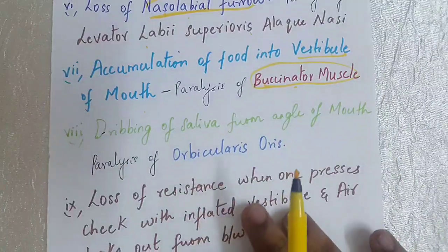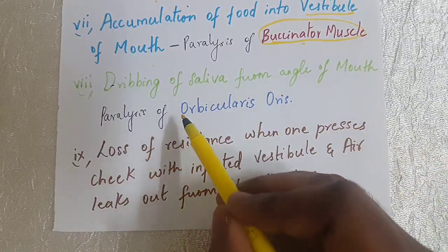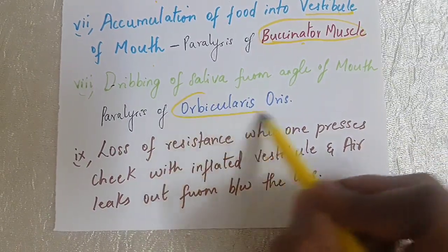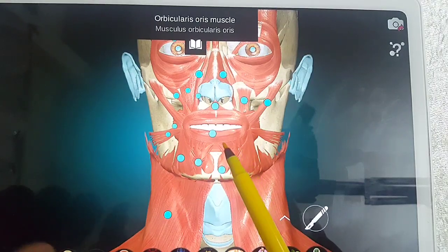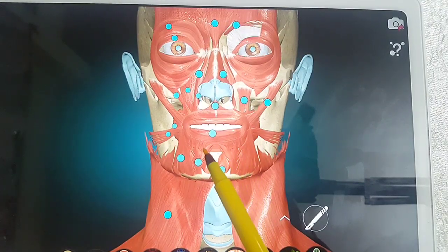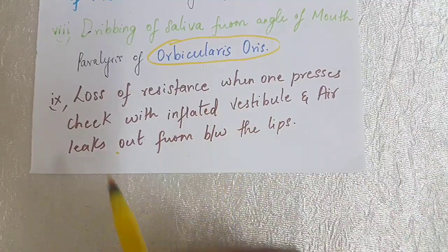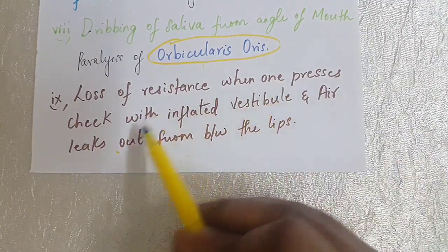The eighth point is dribbling of saliva from the angle of the mouth. This is caused by paralysis of the orbicularis oris muscle. In 3D anatomy, we can see the orbicularis oris muscle — its paralysis leads to dribbling of saliva from the mouth.